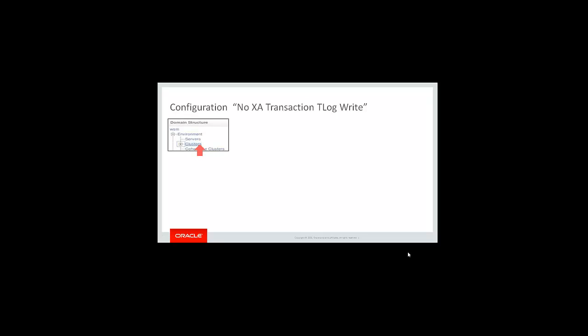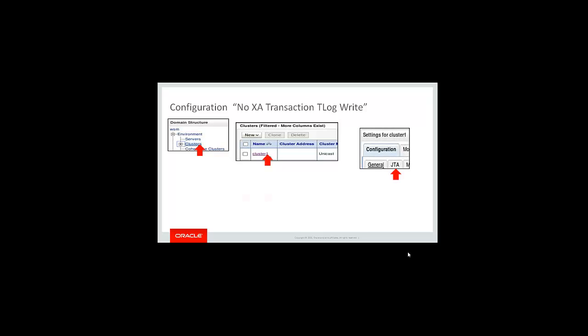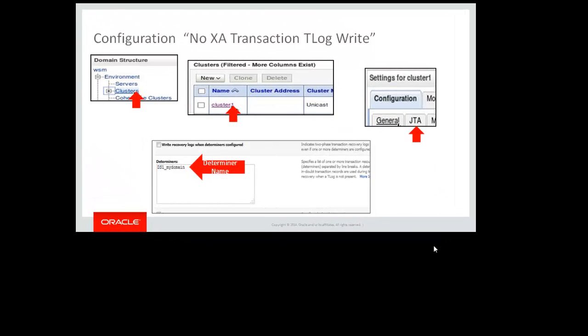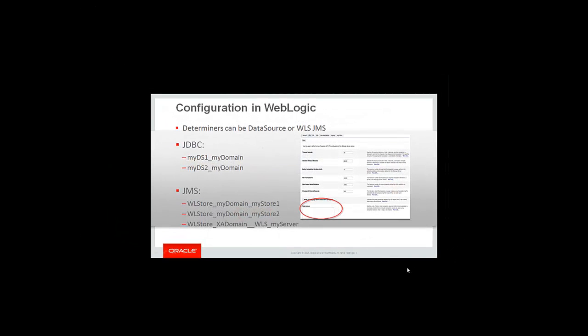How is it configured? You would go to your clusters, choose your cluster name, then the JTA tab, and enter the determiner name in the determiner box. For a JDBC resource, the determiner name would be the data source name underscore domain name. For JMS, it would be WL store underscore domain name underscore store name. For a file store, it would be WL store XA domain WLS underscore server name.